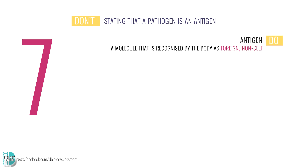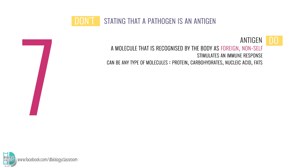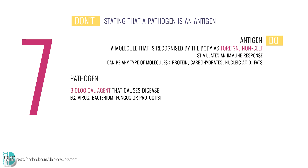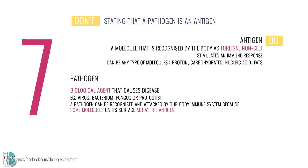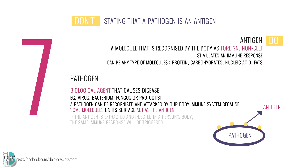Number seven: stating that a pathogen is an antigen. An antigen is a molecule that is recognized by the body as foreign, or non-self, and thus stimulates an immune response. It can be any type of molecule such as proteins, carbohydrates, nucleic acids, or even fats. A pathogen is a biological agent that causes disease, for example a virus, bacterium, fungus, or protist. A pathogen can be recognized and attacked by our body's immune system because some molecules on its surface act as the antigen. If you extract the antigen and inject it into a person's body, the same immune response will be triggered.